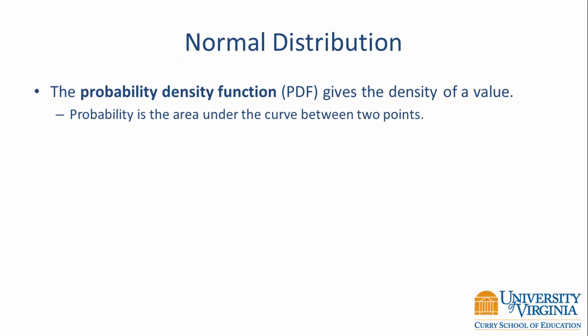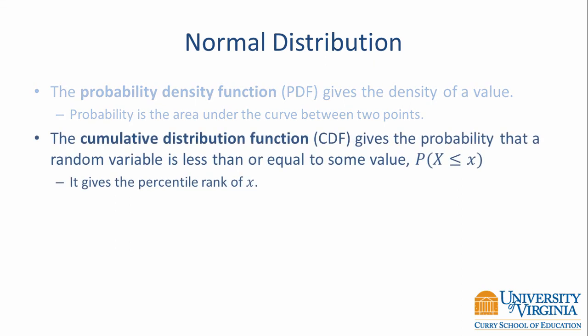We can compute probability as the area between two points on the probability density function. If we compute the integral of this function from negative infinity to a point x, we get the cumulative distribution function. And that function gives us the probability that a random variable is less than or equal to x. In other words, the normal cumulative distribution function gives us the percentile rank of a particular value.